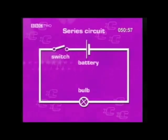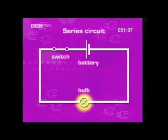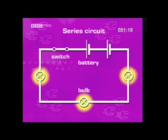In a series circuit, there is only one current path between the positive and negative terminals of the power supply. A switch placed anywhere in the circuit will turn all of the components on and off, and the size of the current is the same at all points in the circuit. Increasing the number of batteries will increase the current, but adding more components will reduce the current because there is more resistance in the circuit.